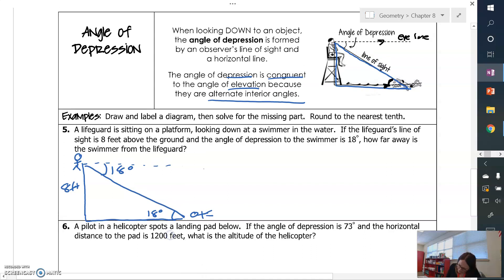And then it says how far away is the swimmer from the lifeguard. So I'm looking for this. All right. So just like before, label your triangle. So this is going to be opposite. This is adjacent. So I'm going to choose tangent. So tangent of 18 equals 8 over x. And then multiply both sides by x. And when you do that,